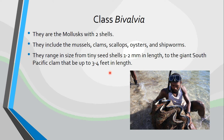The other class is going to be class Bivalvia. These are the bivalves — bi meaning two, valves meaning half. And you can see they are the clams. Here's a giant clam and you can see the two halves of the shell. They are the mollusks with two shells. They include the mussels, clams, scallops, oysters, and shipworms. They range in size from the tiny seed shell of one to two millimeters in length — which, if you're familiar with the metric system, that is not very big at all, maybe the width of a blade on a pair of scissors — to the giant South Pacific clam, which can be up to three to four feet in length. So there's a huge difference in their size and shape.